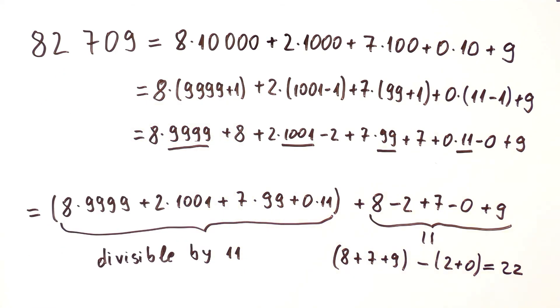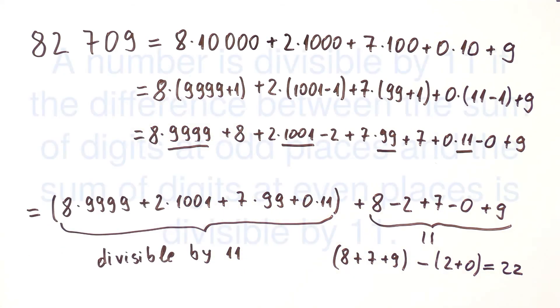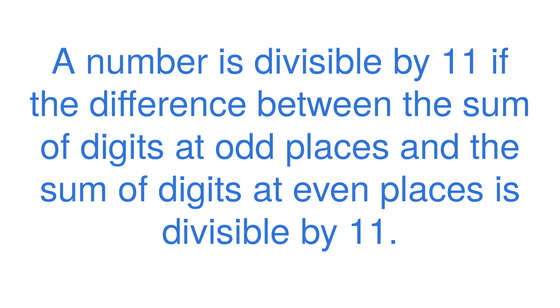We can represent any natural number this way, so we can say that a number is divisible by 11 if the difference between the sum of digits at odd places and the sum of digits at even places is divisible by 11.